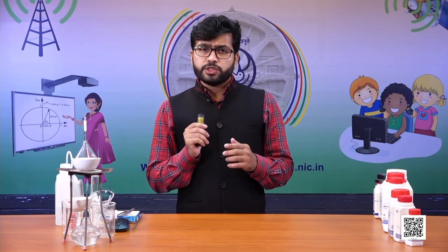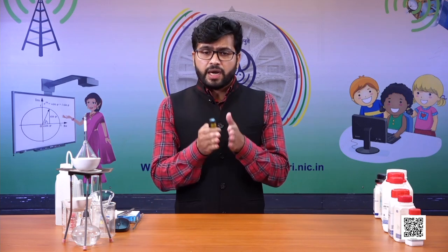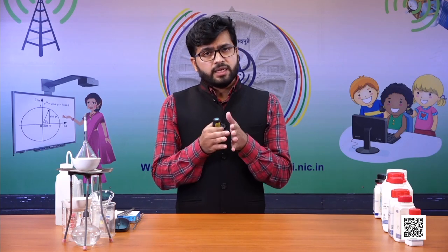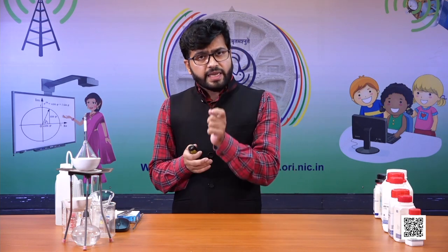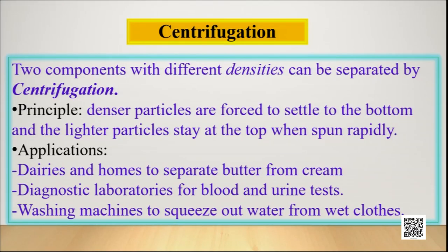When a mixture is rotated at a very high speed, the heavier particles are forced to settle down and the lighter particles float at the surface. In the case of milk, the cream being lighter will start floating at the surface when the milk is rotated at high speed, and it can easily be separated. The denser particles are forced to the bottom and the lighter particles stay at the top when spun rapidly.